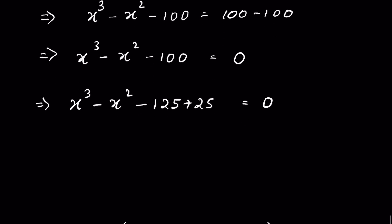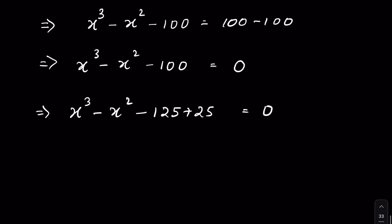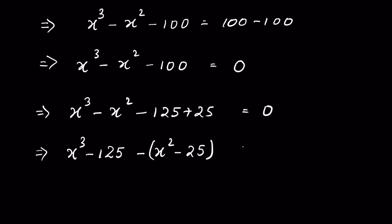Now let's rearrange this. We can write x cubed minus 125 minus x squared, and if we write minus outside, then it will be minus 25, is equal to 0.